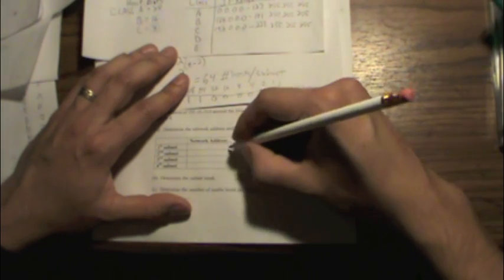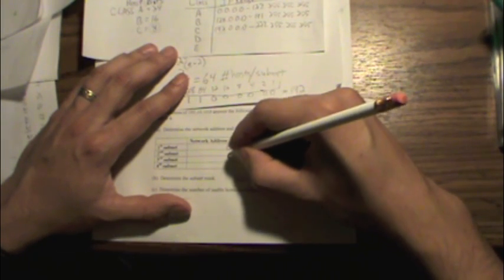We can also start to fill in our chart here. Once we know the mask here is 192, we'll go ahead and start filling in the last octets here. Because we know that the size of each subnet is 64. We always start with the 0 subnet.